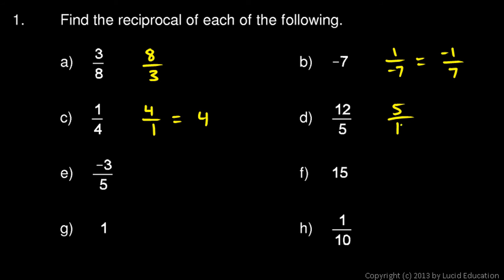D is a simple fraction. The reciprocal of 12 over 5 would be 5 over 12. E, negative 3 over 5. The reciprocal would be 5 over negative 3, and again we don't usually leave the negative sign in the denominator.